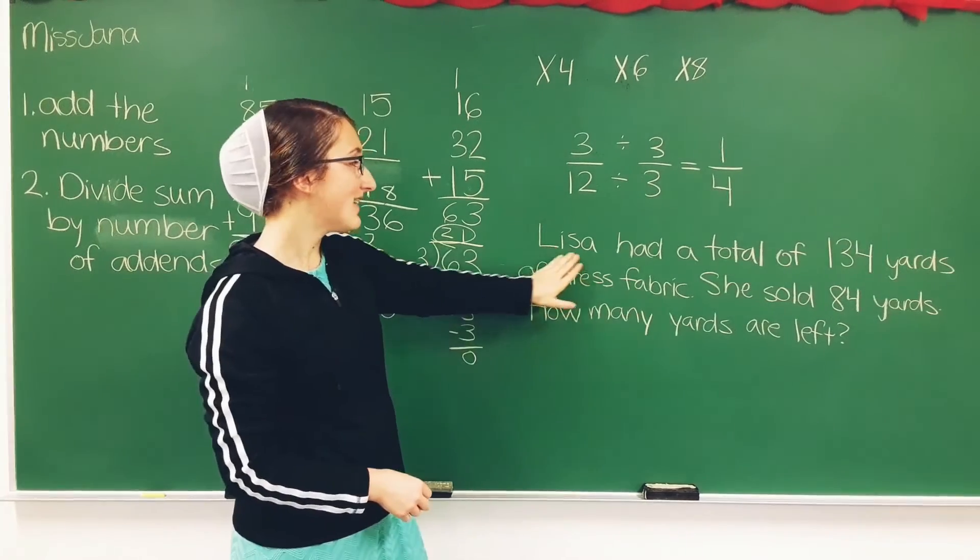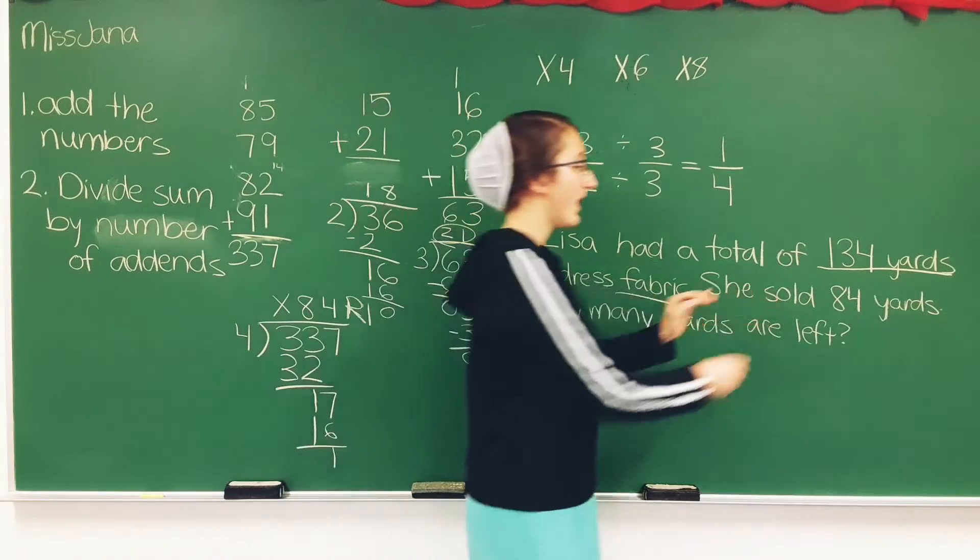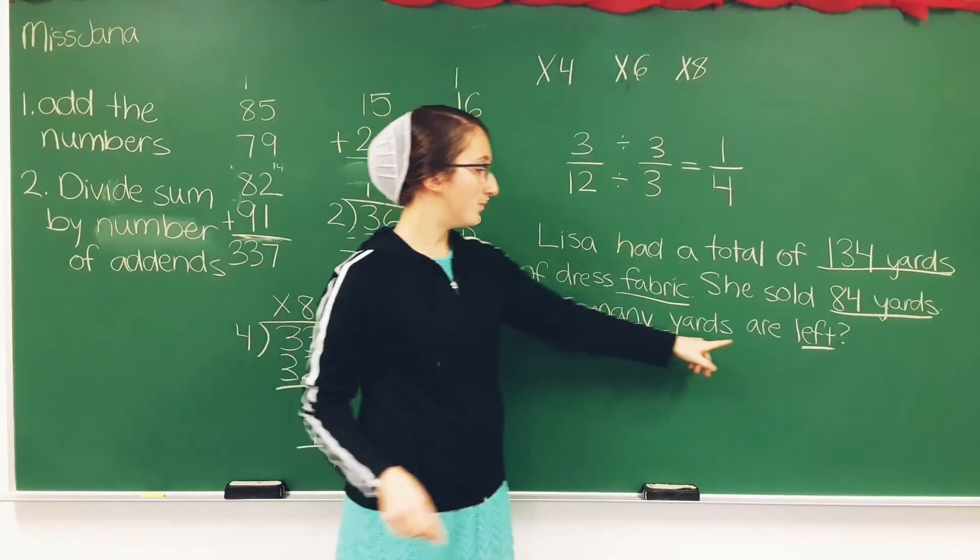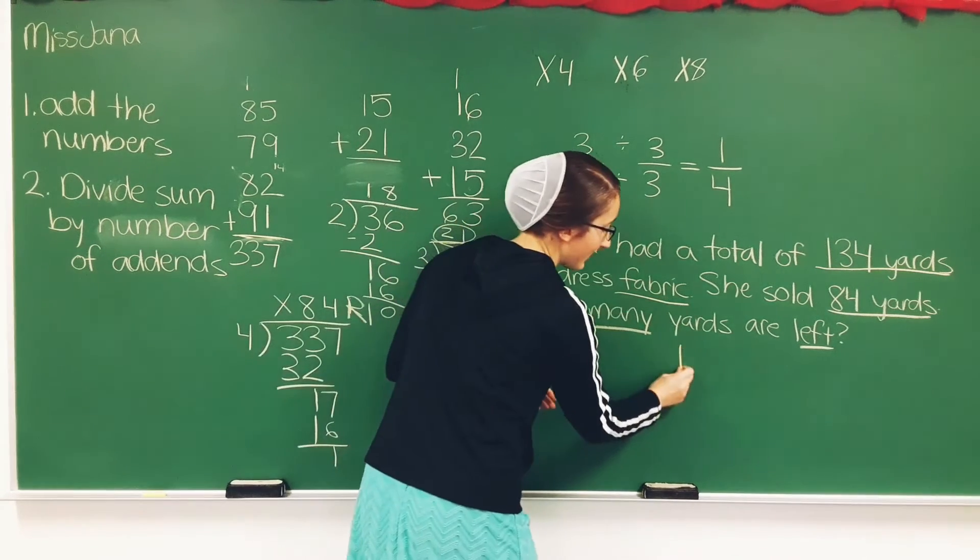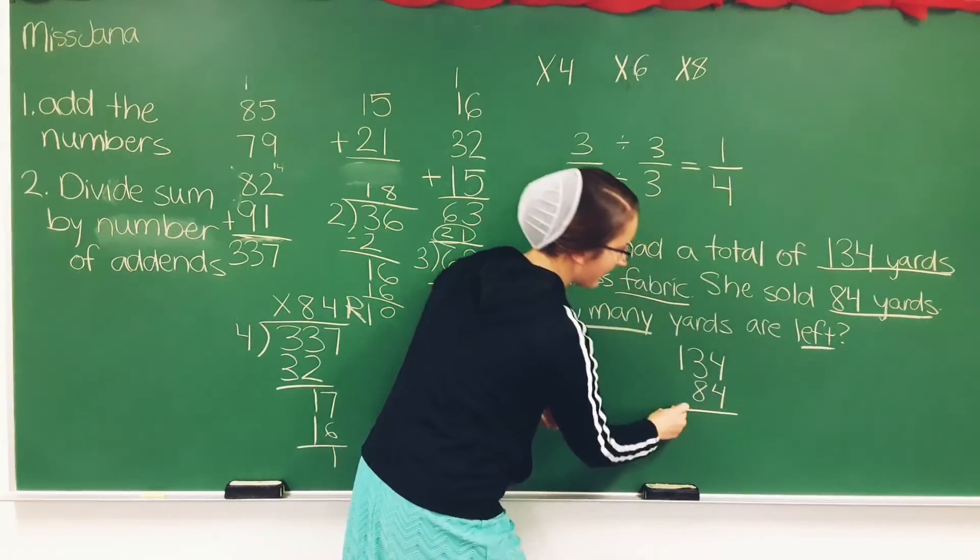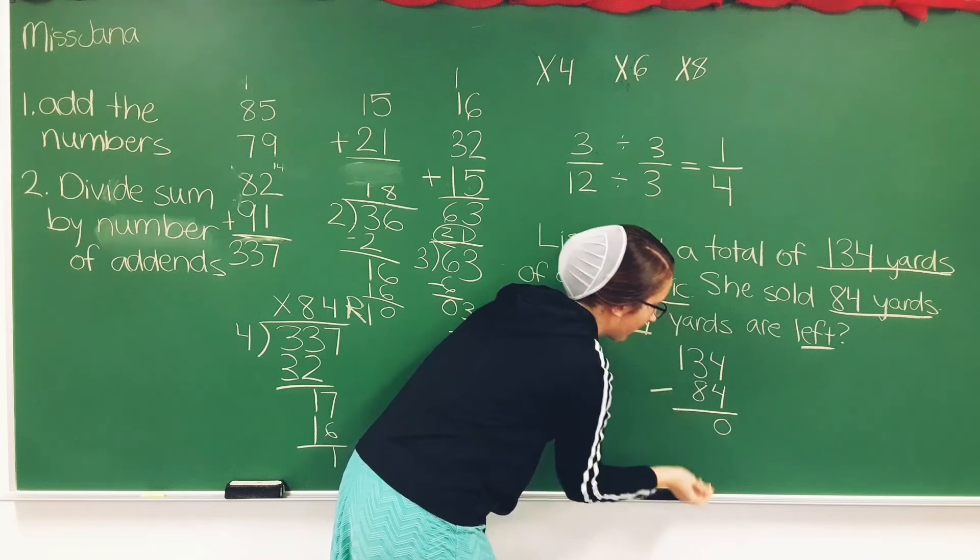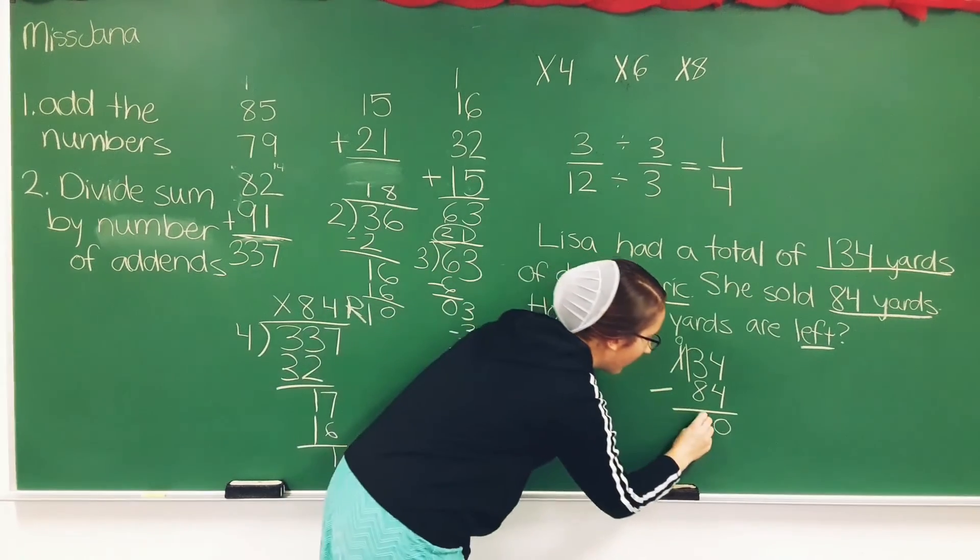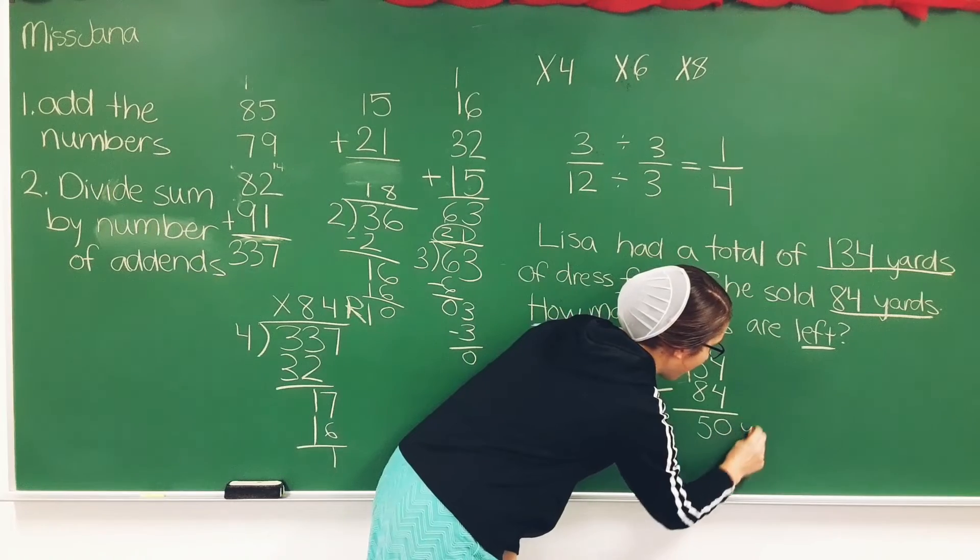We have a story problem here. Lisa had a total of 134 yards of dress fabric. So we need to minus this because we're trying to find out how many are left. She starts out with 134 yards and she sold 84. So we need to minus it to find out how many she has left. 4 minus 4 is 0. 3 minus 8 does not work, so we're going to borrow. 13 minus 8 is 5. Lisa has 50 yards of dress fabric left.